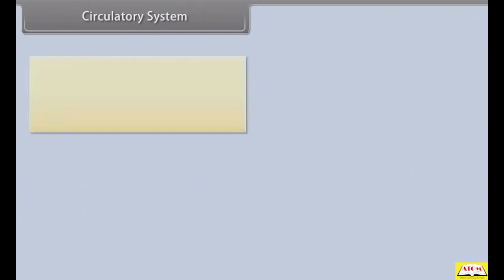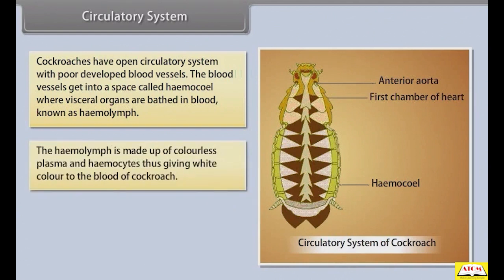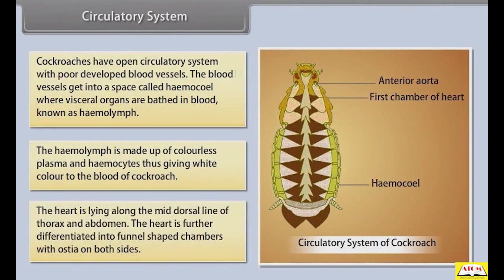Cockroaches have an open circulatory system with poorly developed blood vessels. The blood vessels open into a space called the haemocoel, where vascular organs are bathed in blood known as haemolymph. The haemolymph is made up of colorless plasma and haemocytes, giving a white color to the blood of the cockroach. The heart lies along the mid-dorsal line of the thorax and abdomen, and is further differentiated into funnel-shaped chambers with ostia on both sides.